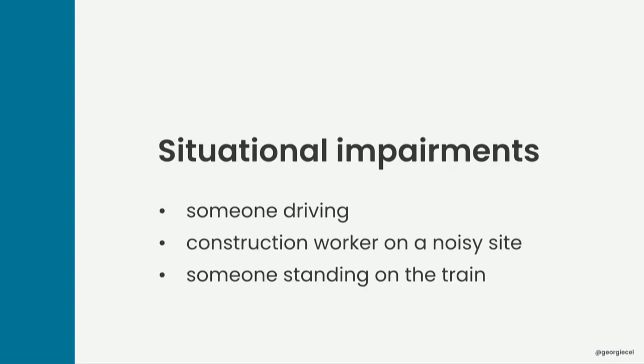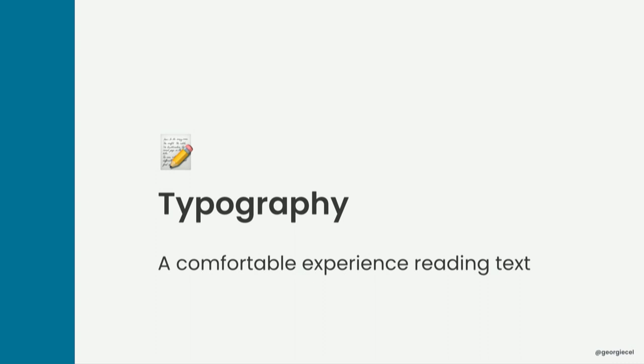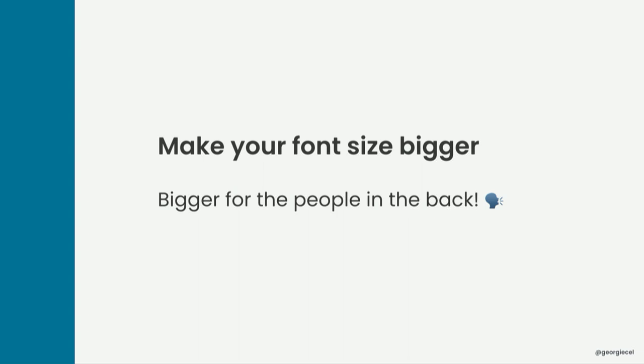It also includes situational impairments. Even though you likely wouldn't use your phone while driving, your hands are generally not available to do much else when you're driving. Another example is a construction worker on a noisy site being unable to hear someone else's voice above the noise, and maybe someone on the train just holding onto a handrail — they only have one hand free. So the first thing we'll talk about is in the category of typography, and we want to give everyone a comfortable experience while reading text on the web.